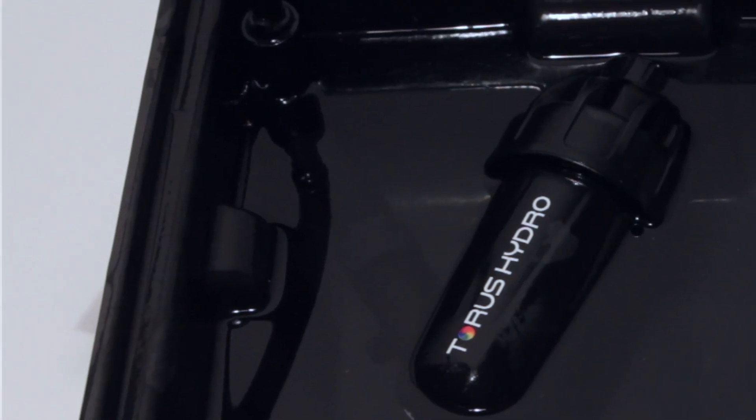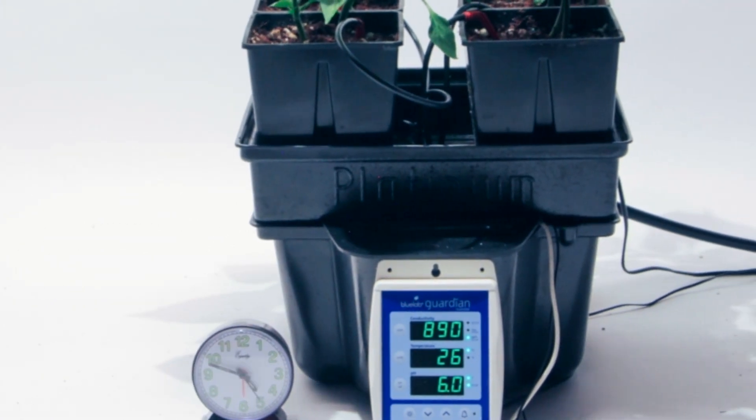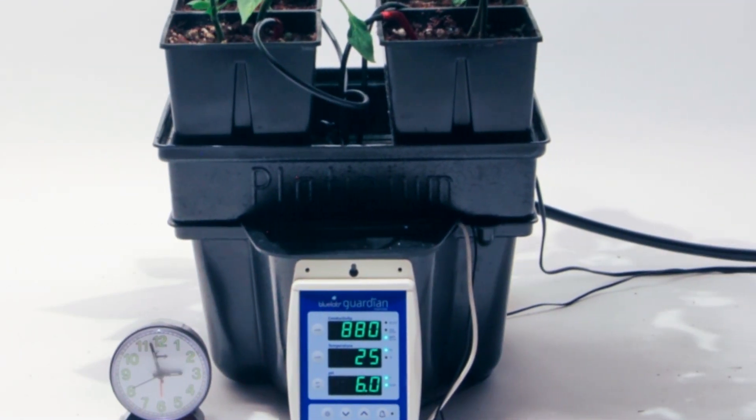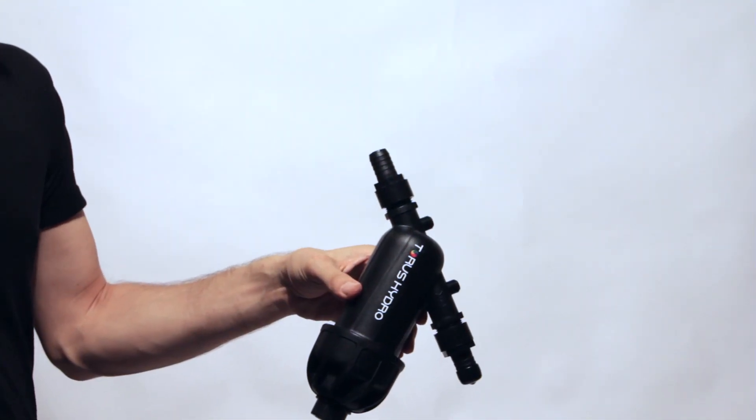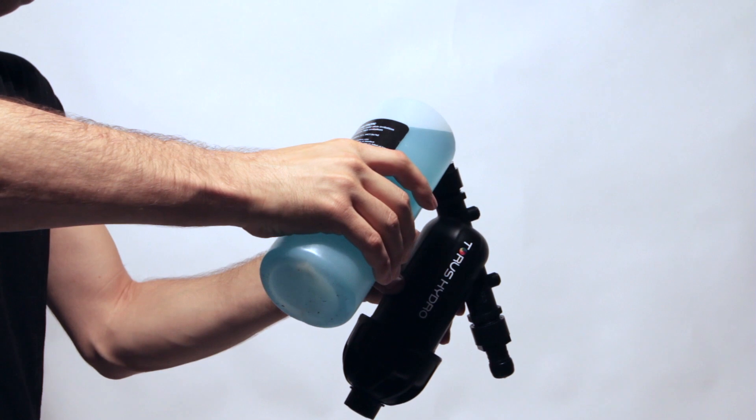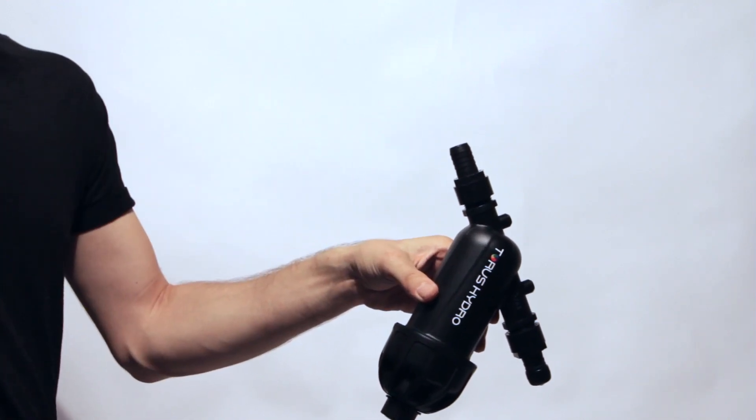Depending on the specs of your system, the Perfect pH will work effectively for two to four months. After this point, the device can be reused again and again with a simple rinse in our recharge solution to restore it to proper efficiency. You can think of it like a rechargeable battery—when its charge depletes, our recharge brings it back to working order.